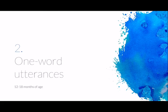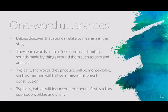The one-word utterance stage runs from around 12 months up to 18 months of age. This is when babies discover that sounds relate to meaning — they realize that the different sounds people make mean particular things or make things happen. They learn words such as 'no' and 'uh oh,' and imitate sounds from cars and animals. Typically the words they produce are monosyllabic, such as 'ma' or 'da,' following a consonant-vowel construction, mainly because they're easy to pronounce.